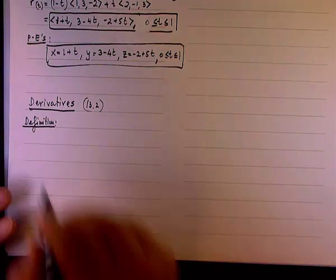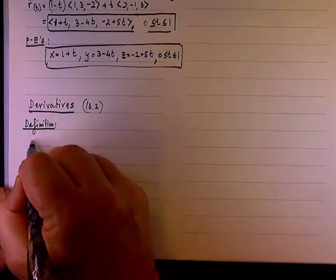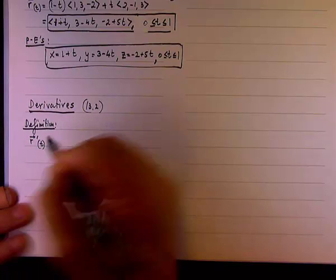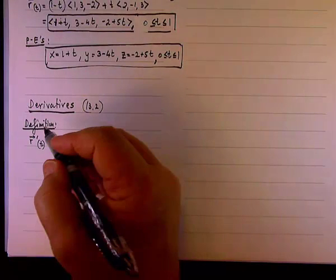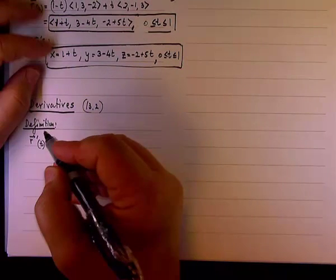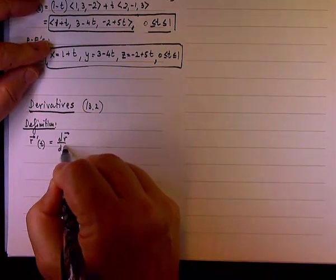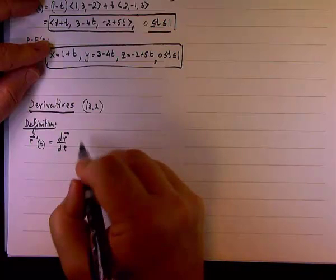The definition is very similar to what we had in Calc 1. If we have a vector r of t, or a vector function r(t), then the derivative, we can write it as dr/dt, like so, except r is a vector.